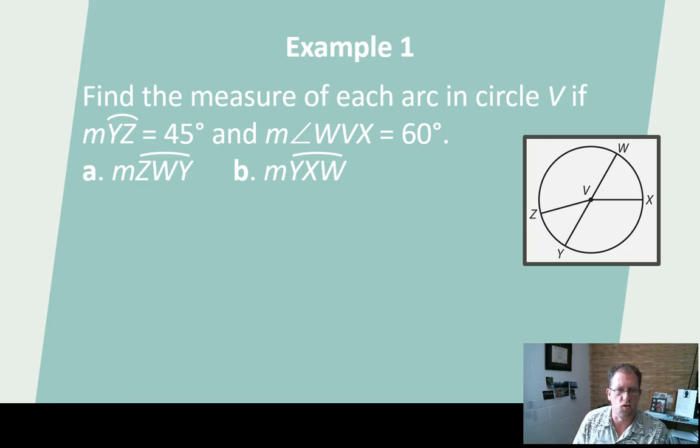Let's do an example here. I have a circle with some arcs indicated. Find the measure of each arc in circle V if the measure of arc YZ is 45 degrees. That's this guy. This is 45 degrees. And the measure of WVX is 60. That's 60. So 60 and 45. These are not vertical angle pairs.